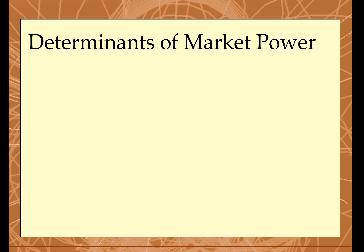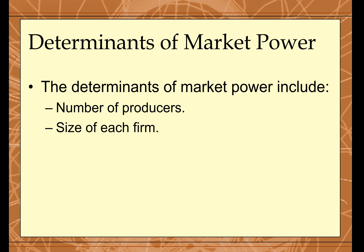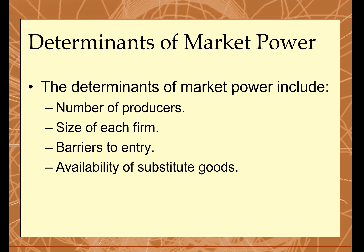What gives a firm market power? If there are fewer firms in the industry, any individual firm controls more of the market supply, giving it the ability to influence market price. The bigger you are in terms of market share, the more market power you have. Additionally, if you can keep other firms out of the industry, you can attain market power. Fewer substitutes also means fewer competing firms and more market power.